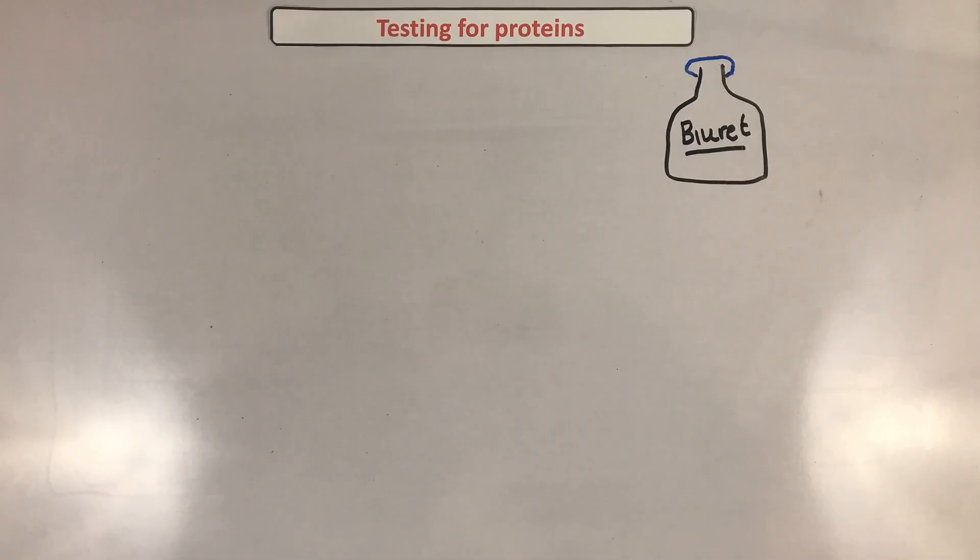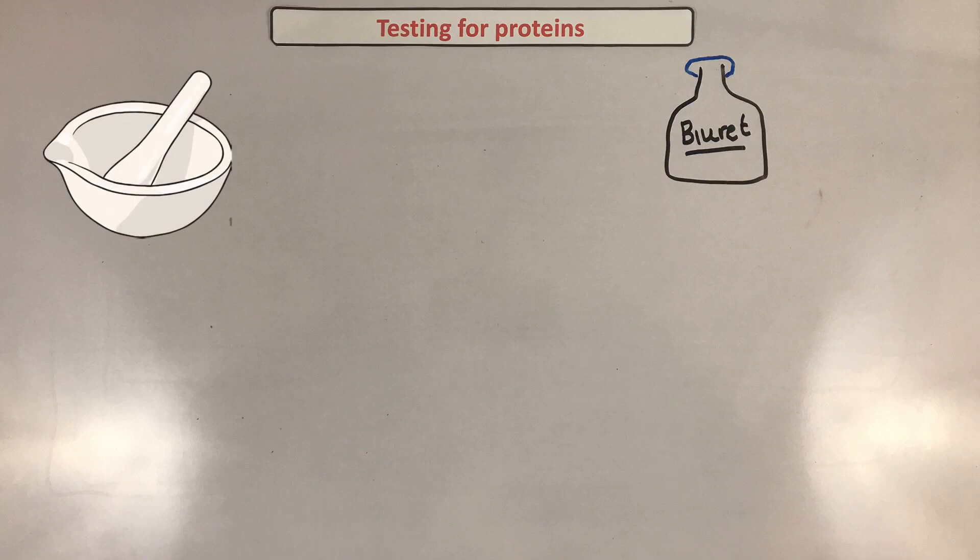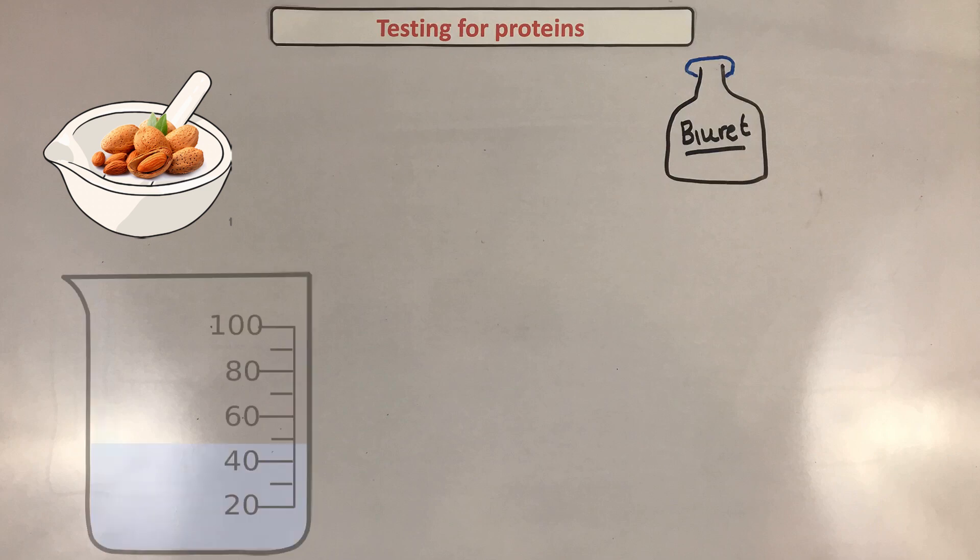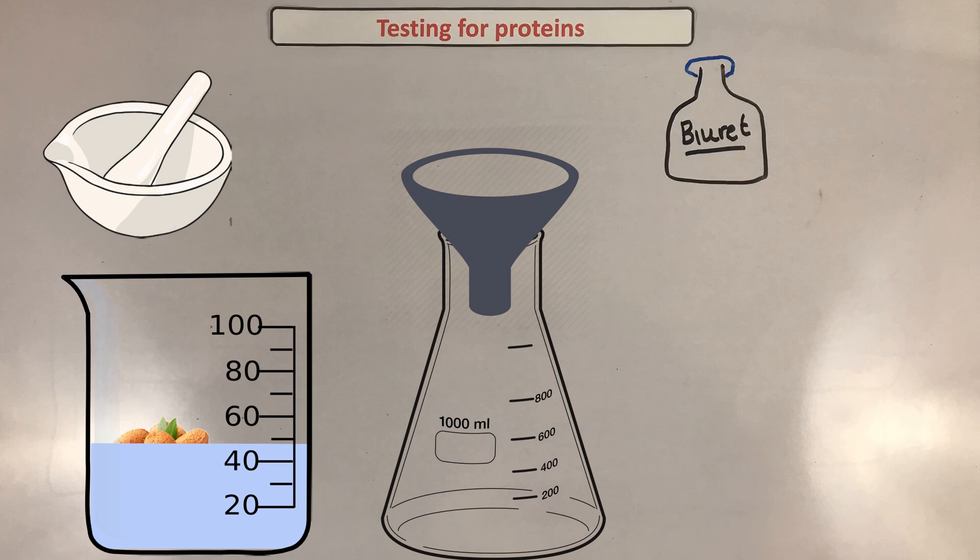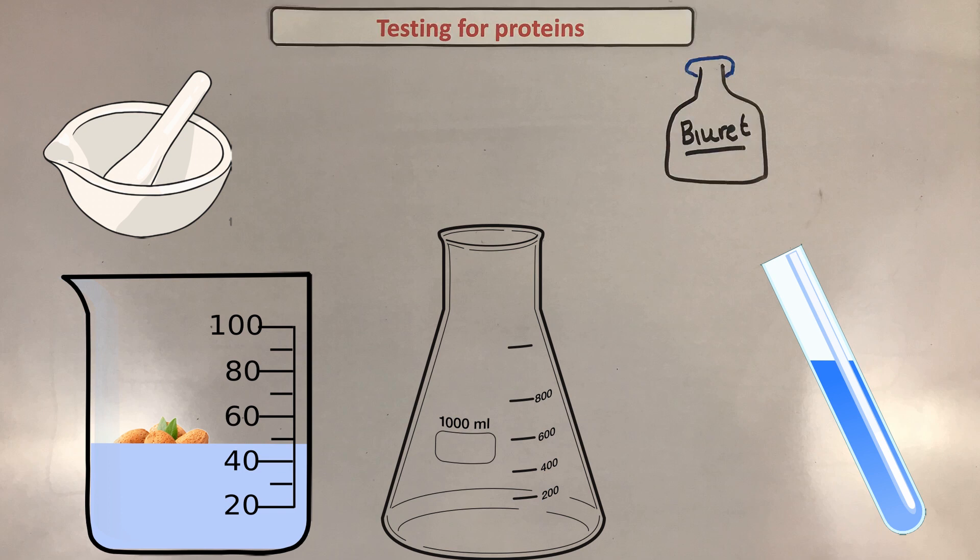Finally, last but not least, it's the proteins - this is the biuret test. Don't get it twisted with the Benedict test. For this test: number one, you get your pestle and mortar and grind your food. Number two, you add your beaker and some distilled water. Then number three, you stir your food so that some of the food is dissolved. Number four, you're filtering the solution so that your filtrate is as clear as possible. Number five, you add three centimeters cubed of your filtrate into a test tube. Number six, you add three centimeters cubed of your biuret solution and then shake it gently. If it goes pink or purple, then you've got proteins in your solution.